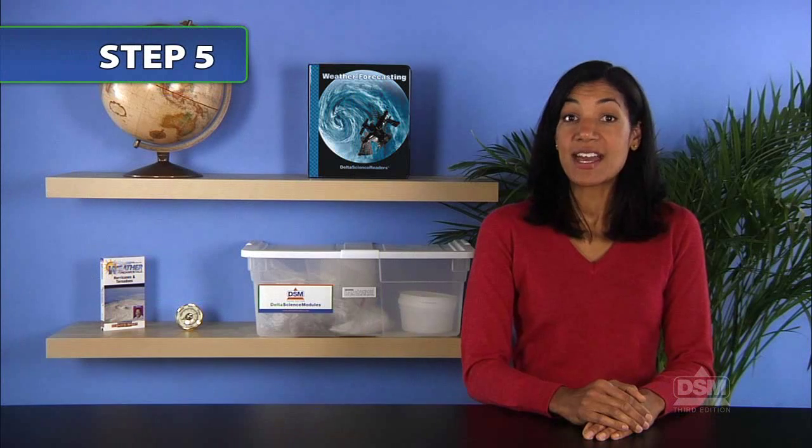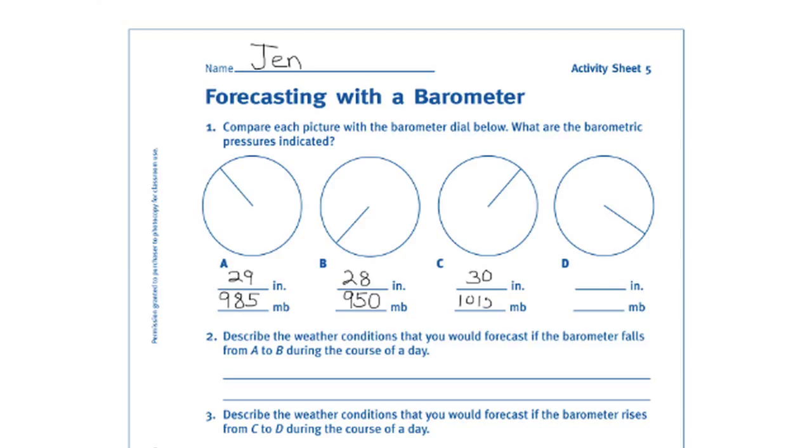Distribute a copy of Activity Sheet 5 to each student. Have students interpret the air pressure readings on the diagrams of aneroid barometers on their activity sheets.